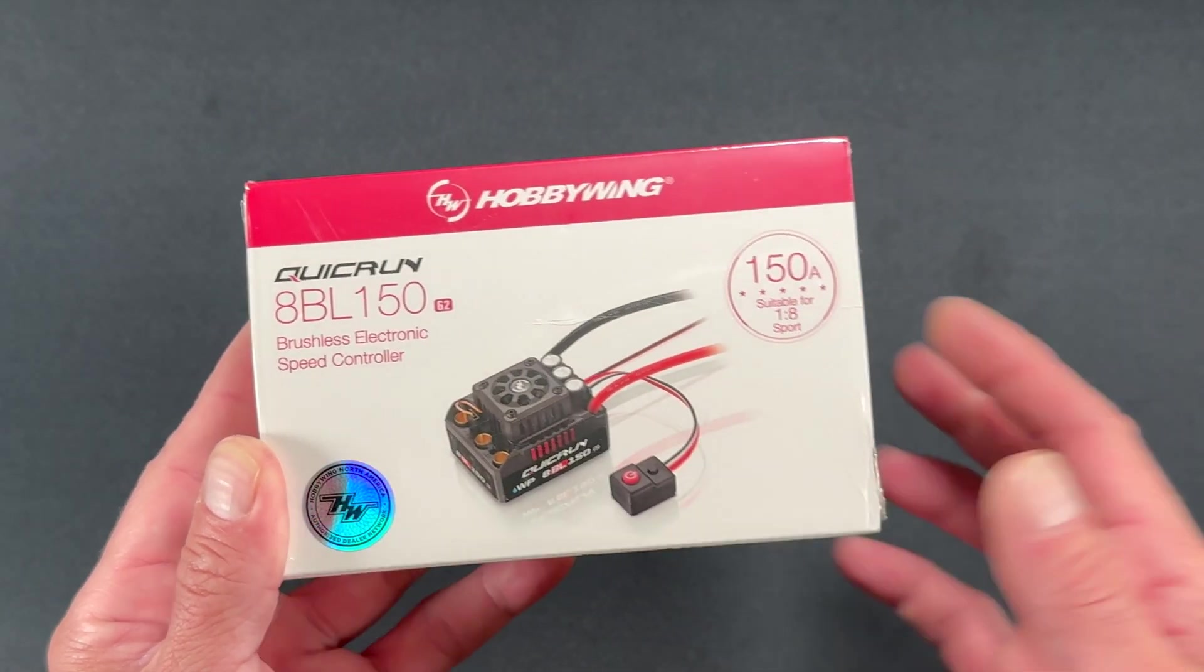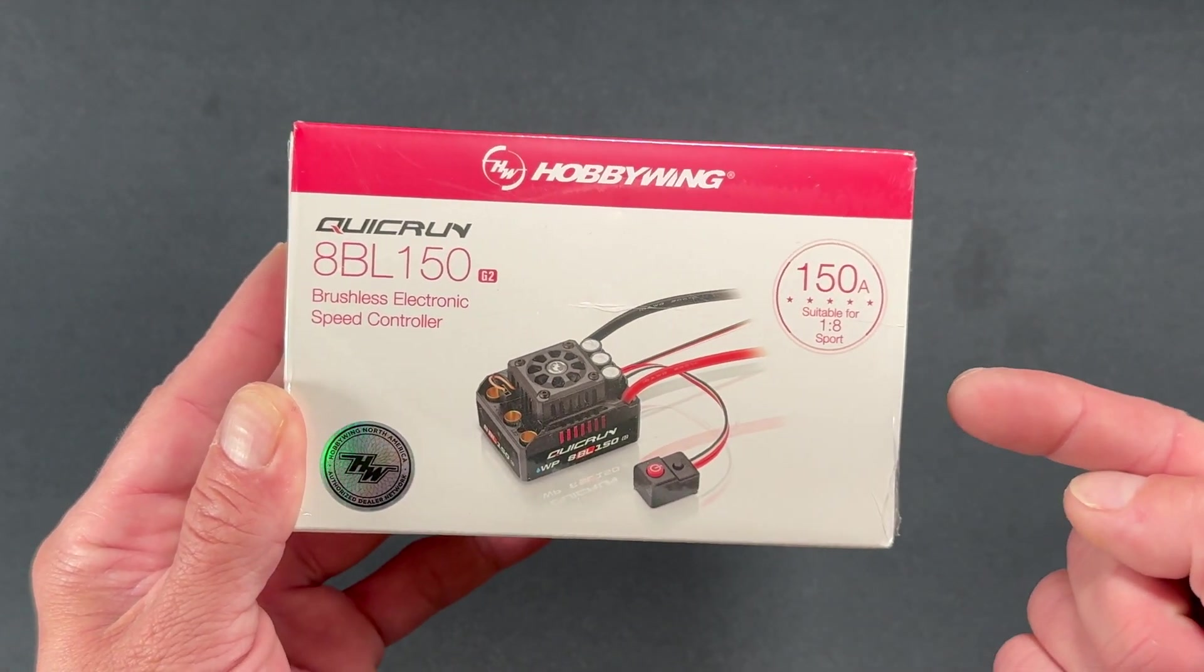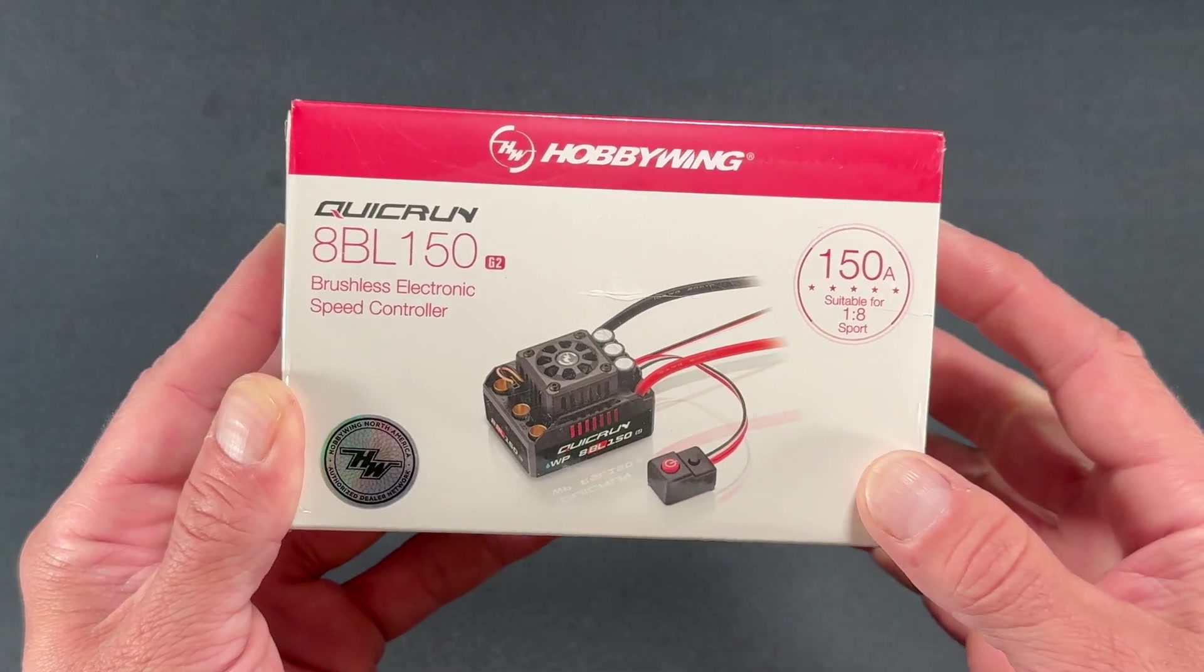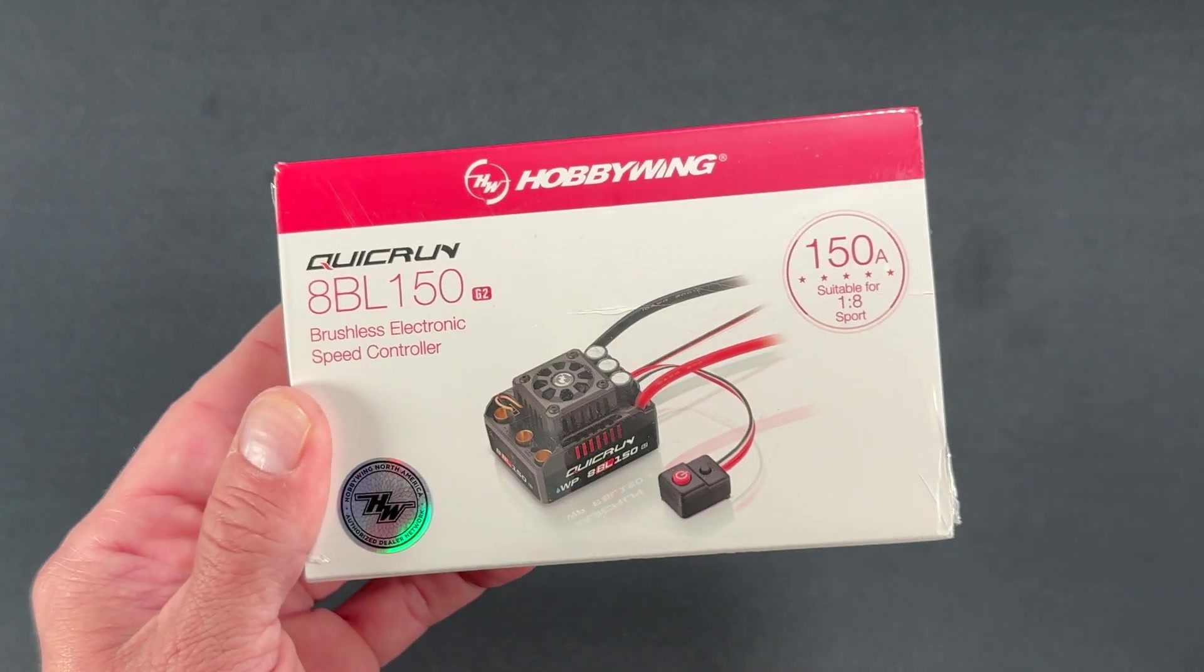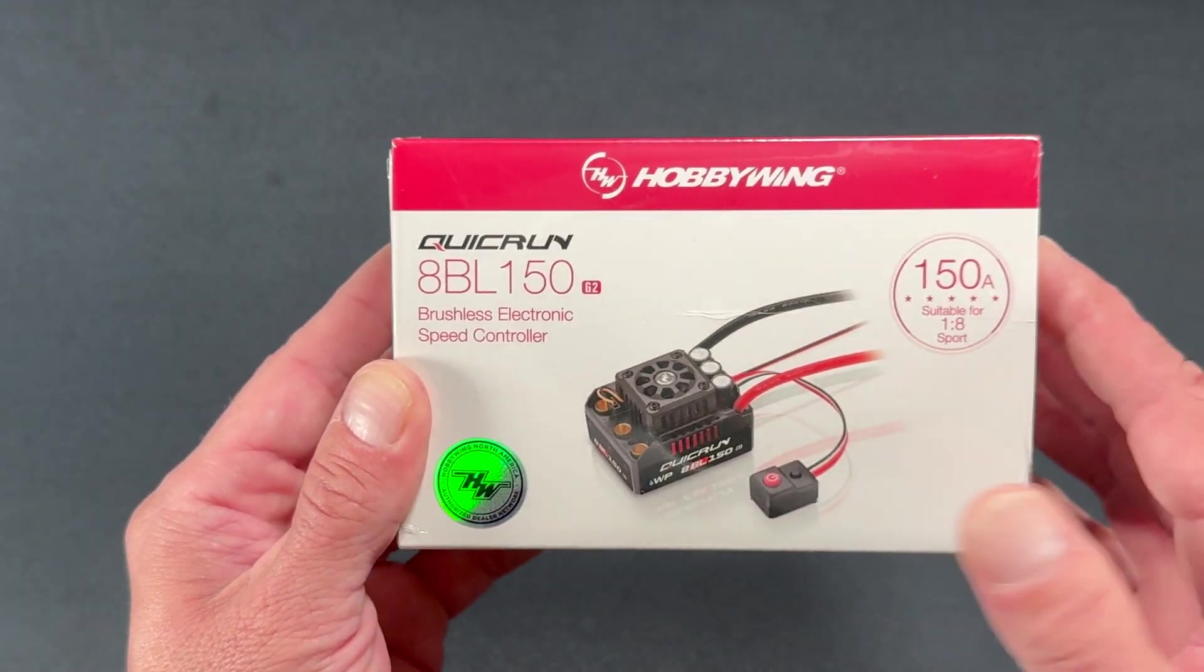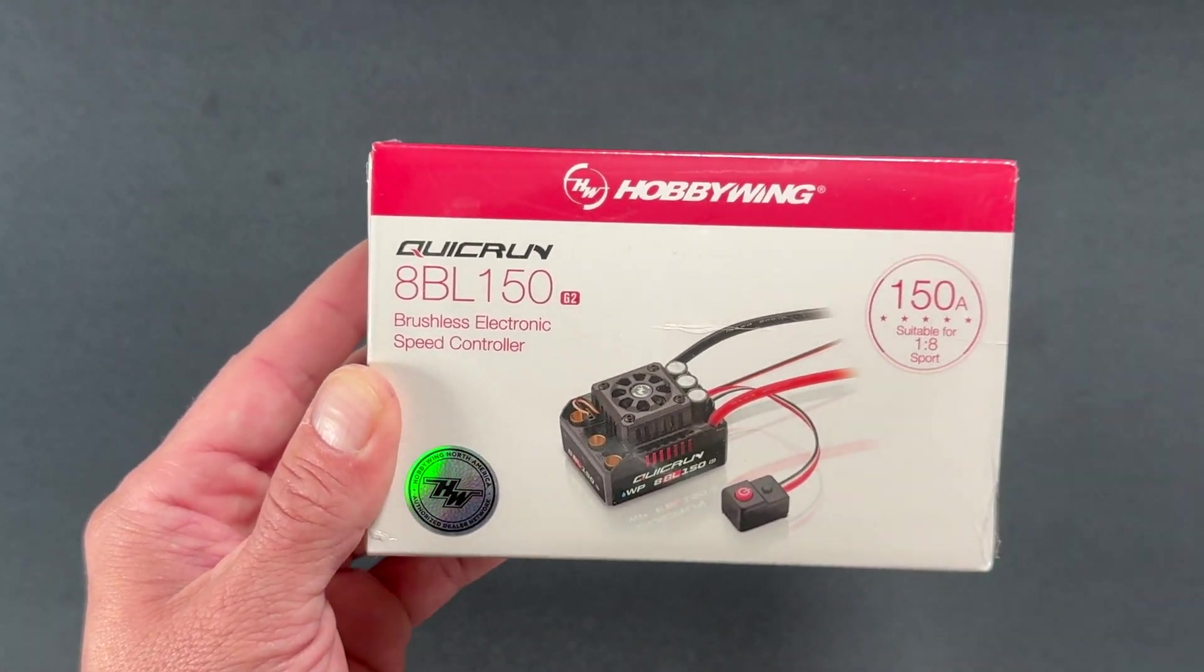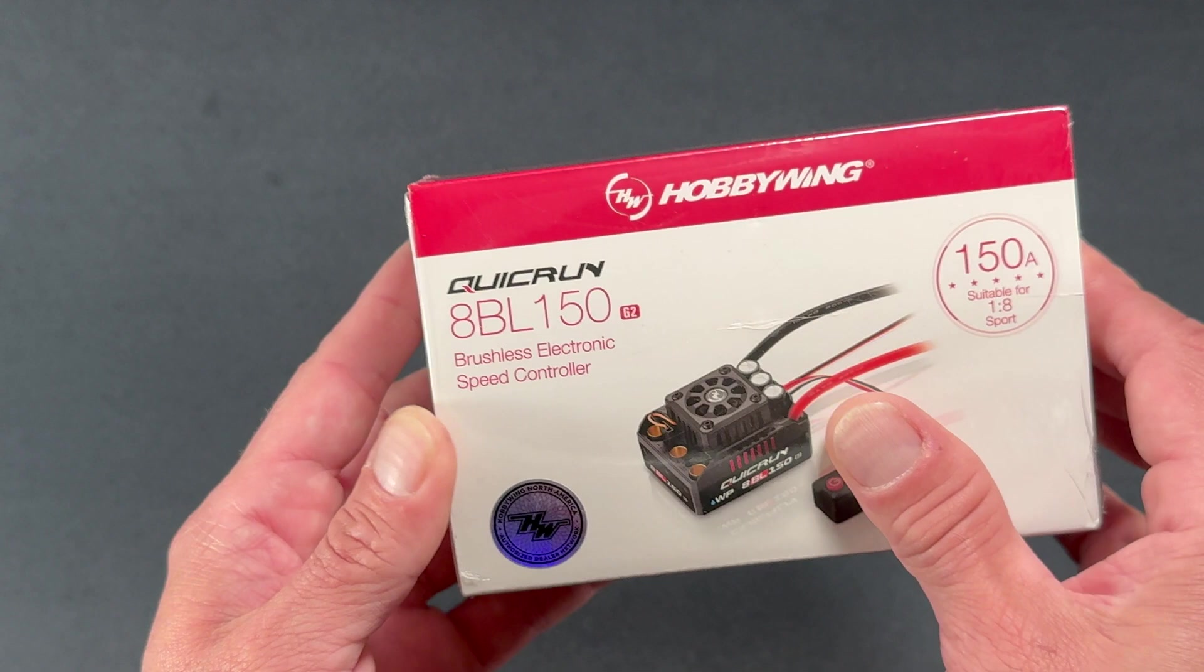What is up nerd friends? Welcome back to the nerd bench. We're going to take a look at the new QuickRun 8BL-150 G2. This is a new speed control in the QuickRun series. It's set up for three to six cell operation, kind of for like eighth scale, seventh scale, stuff like that. Some of the big power applications.